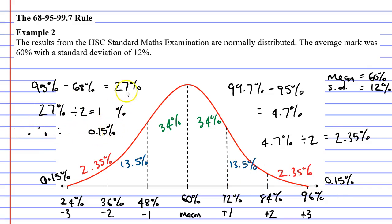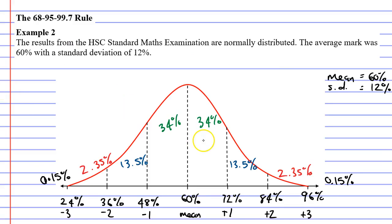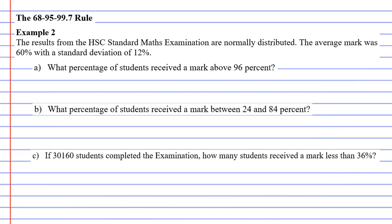Now that I've labelled all the parts of my bell curve with these percentages, I can move on to answering the questions. To clean it up, I'll just delete all the working out because it looks a bit cluttered at the moment. Looking at question A, it says what percentage of students received a mark above 96%? So 96% is this point here and a mark above it goes to the right which means that only 0.15% of the students got a mark above 96%. 0.15%.